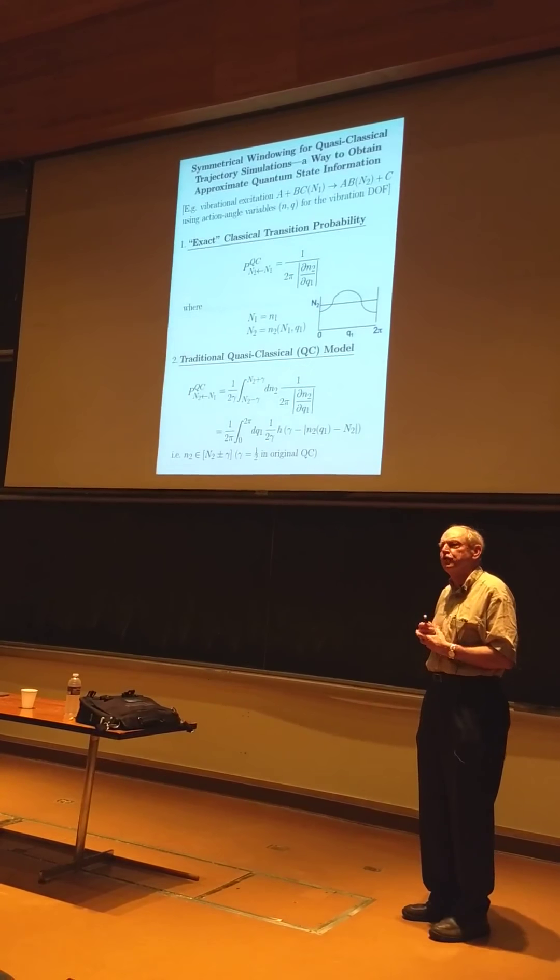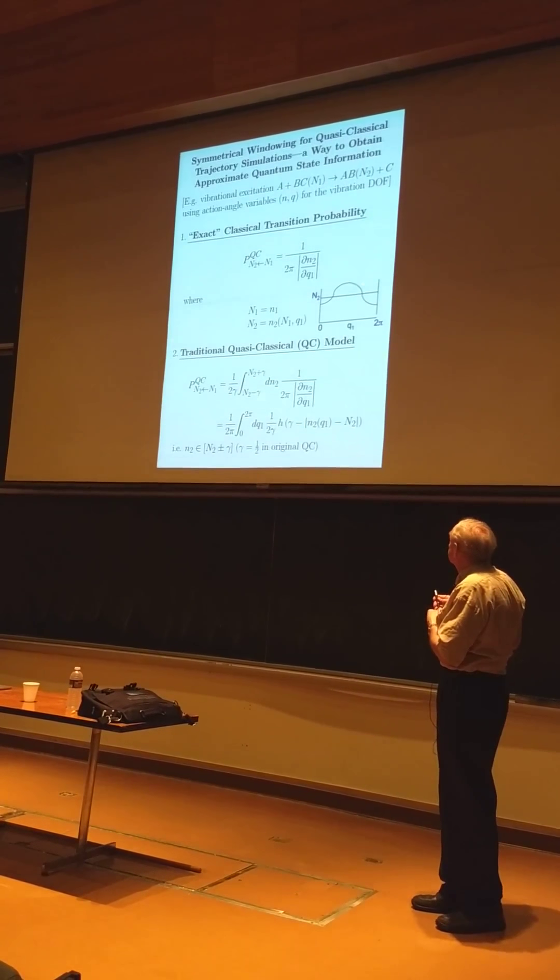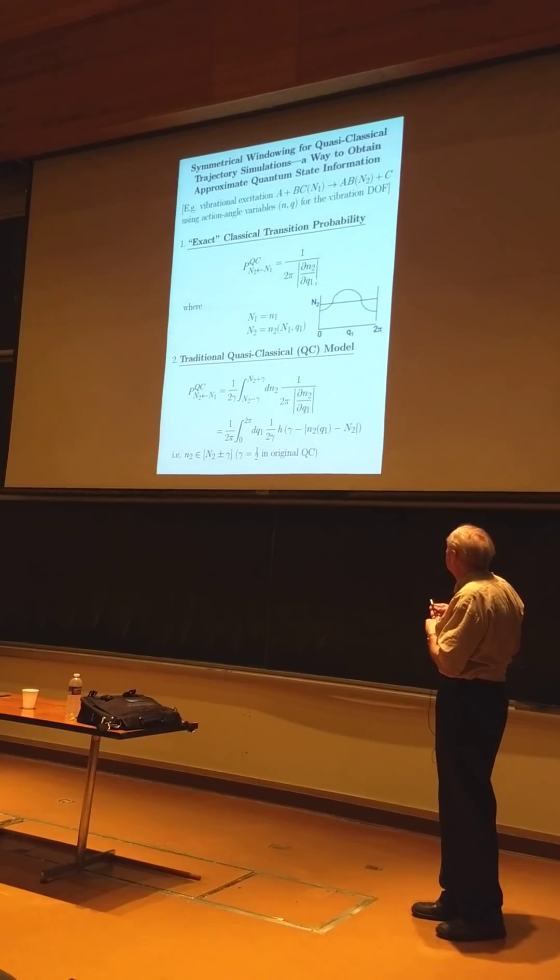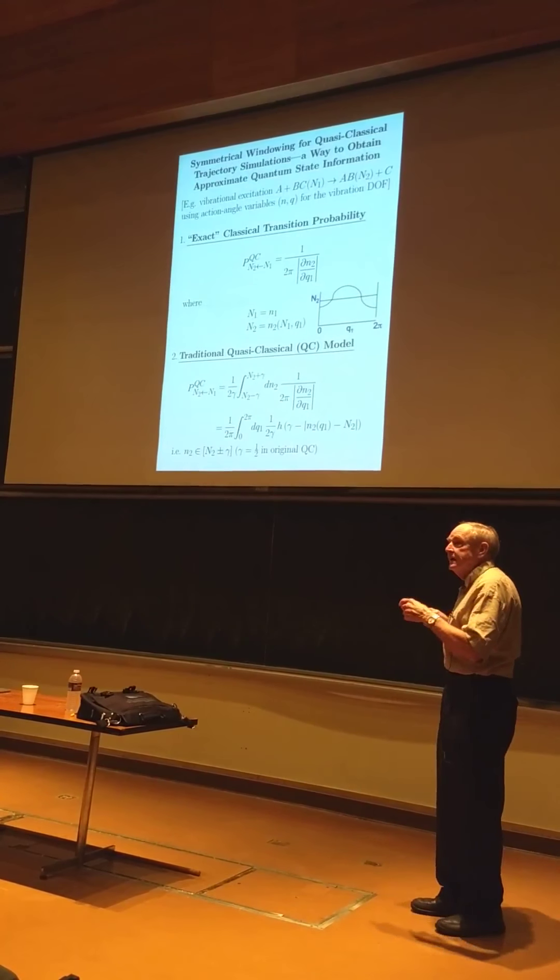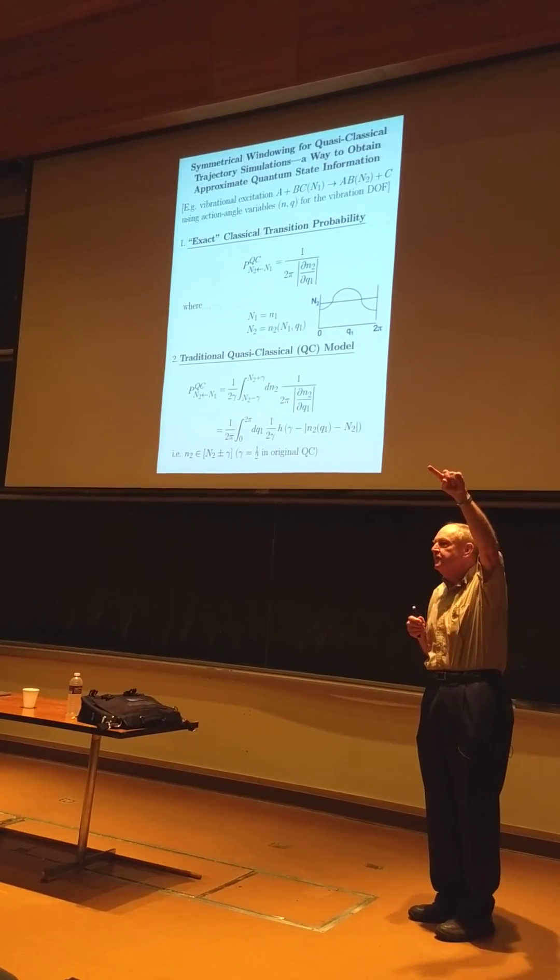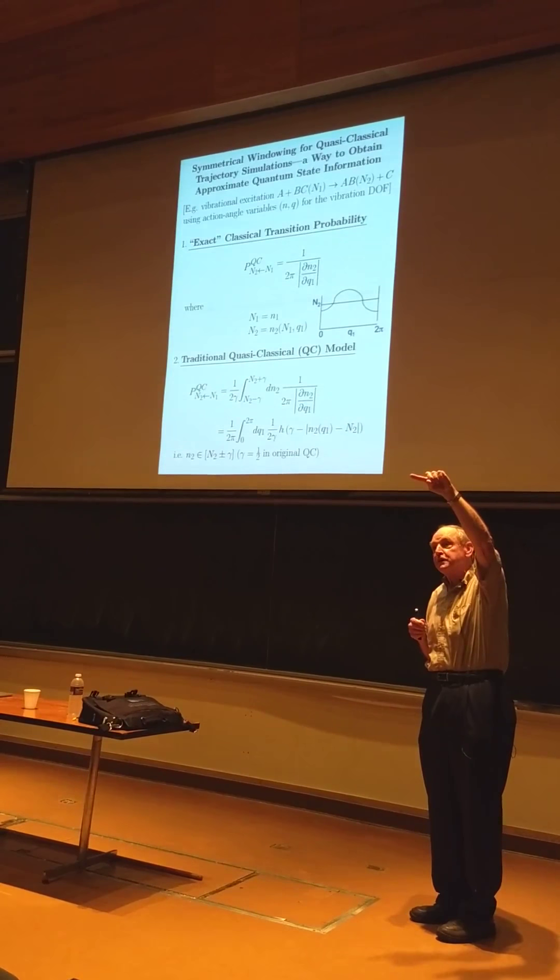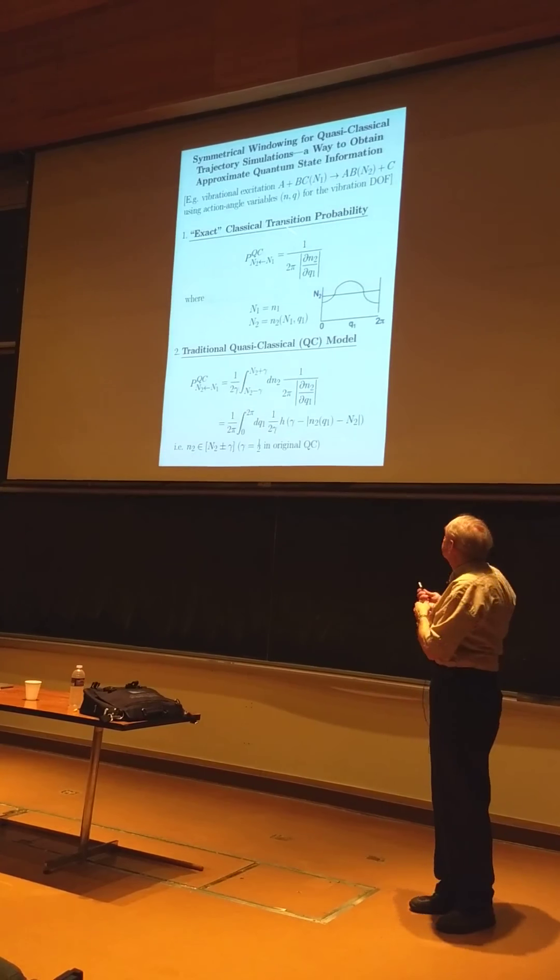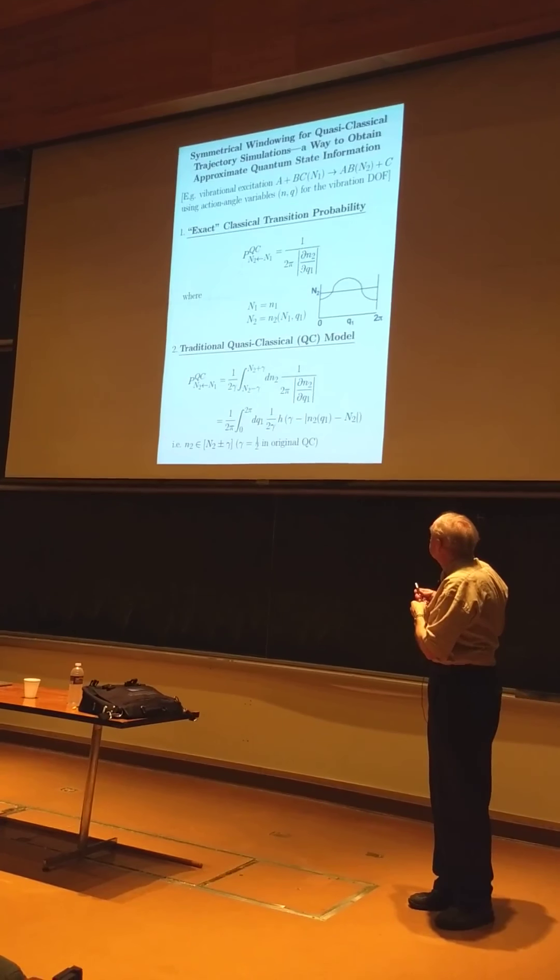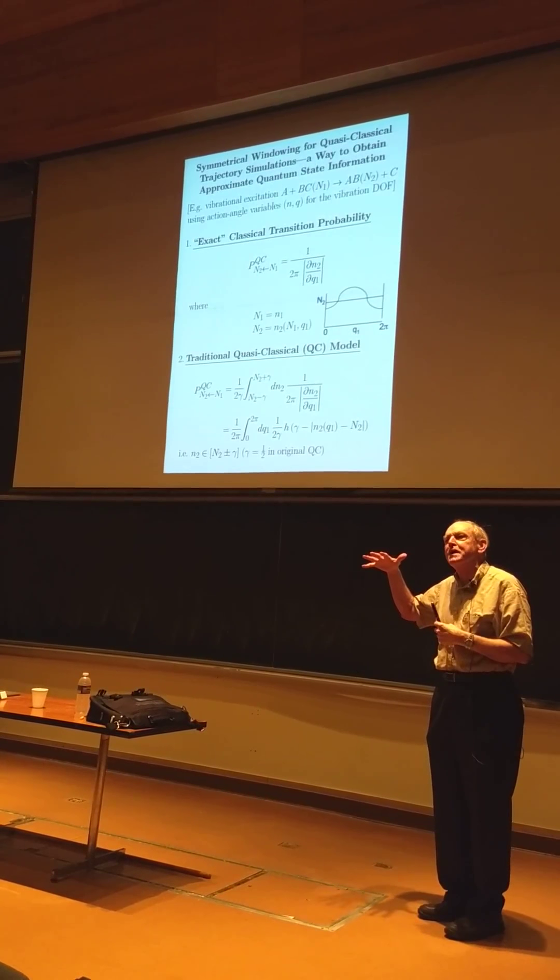Now, this is exact classically. Purely classically. But it's not the most useful because it has singularities. You know, when a value is a final action up here on the top, that slope is zero, and this goes to infinity. That's analogous to being at a classical turning point in a WKB wave function. It diverges. It's qualitatively correct.